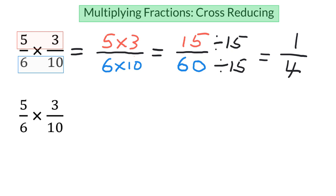But what I want to teach you today is going to make it more efficient, and you get to work with easier numbers. It's called cross-reducing. That means you can reduce before you even multiply — diagonally across. In this case, the 5 and the 10 are diagonally across from each other. We need to find the greatest common factor for 5 and 10, which would be 5. So we're going to divide 5 by 5 to get 1, and 10 divided by 5 to get 2.